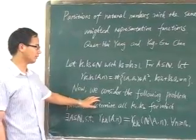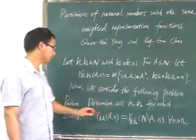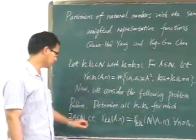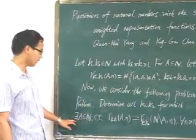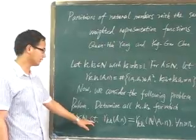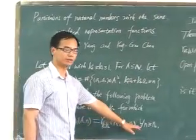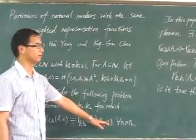Now, we consider the following problem. Determine all k1, k2 for which there exists a subset A of N such that this equality holds for all sufficiently large integers N.